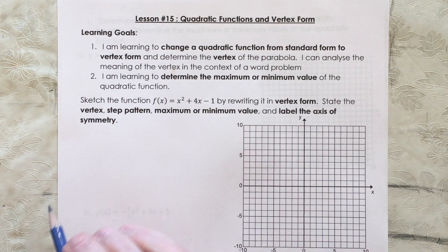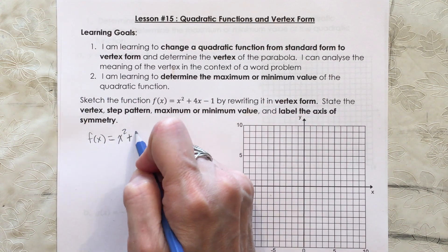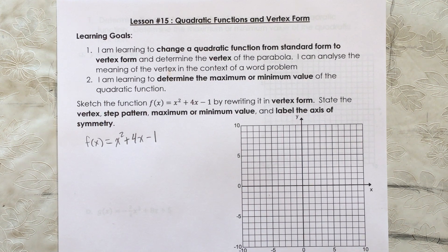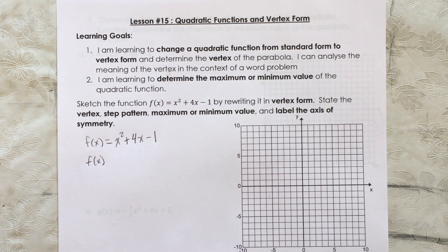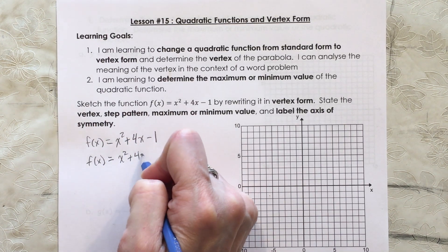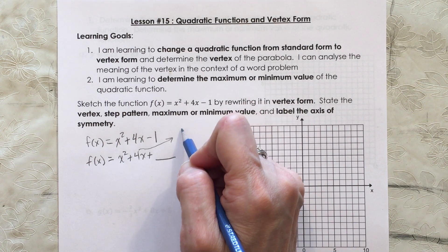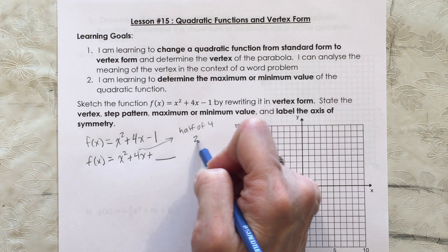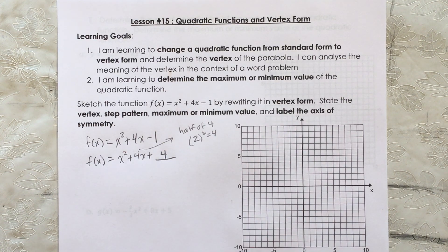So I'll start. f(x) = x² + 4x - 1. That's the standard form of a quadratic function, and we want to change it into vertex form by completing the square. The number in front of x² is 1, so we don't have to factor it out. To complete the square, we take half of that number 4 — half of 4 is 2 — then square 2, which is also 4. So we add 4, and that makes a perfect square trinomial.